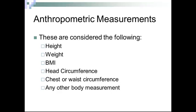Anthropometric measurements are considered the following: height, weight, BMI, head circumference, chest or waist circumference, and any other body measurements. More and more we are seeing waist circumference as insurance companies are requiring this in the annual wellness visits.